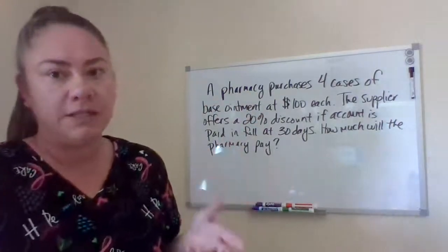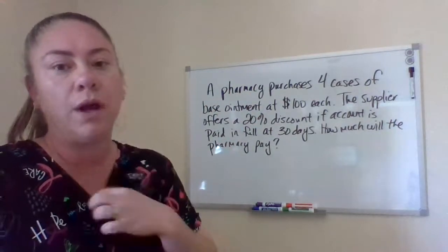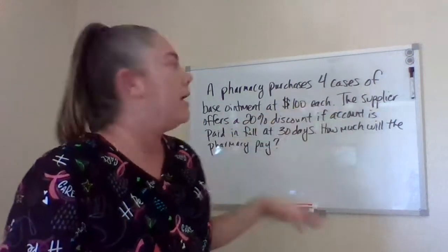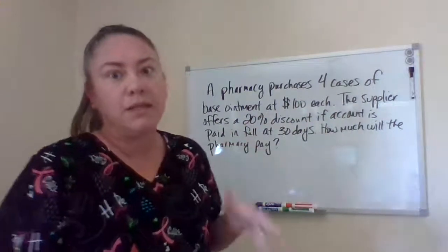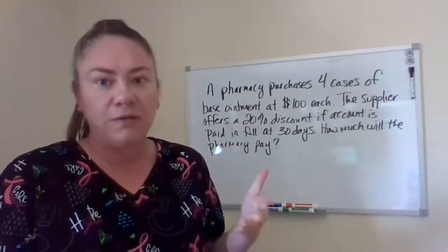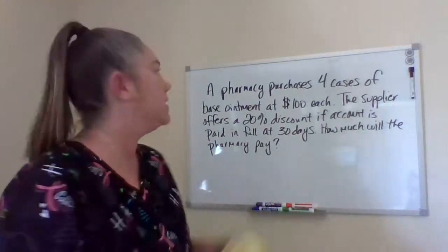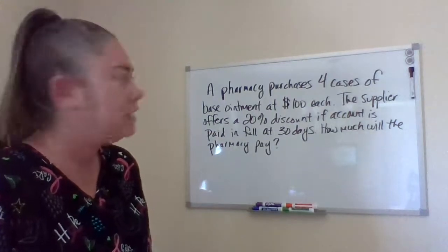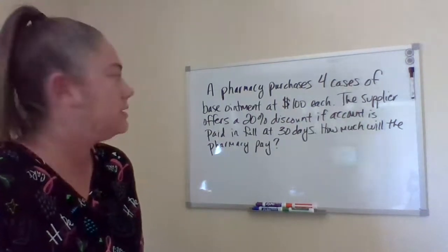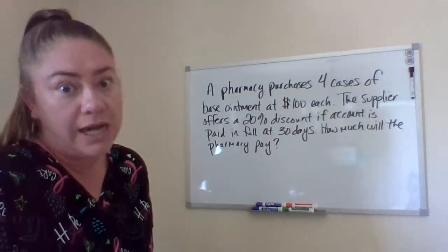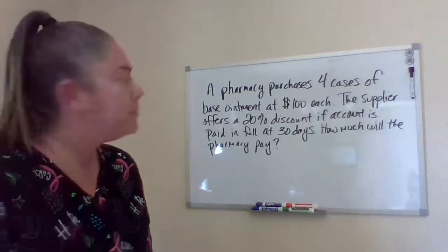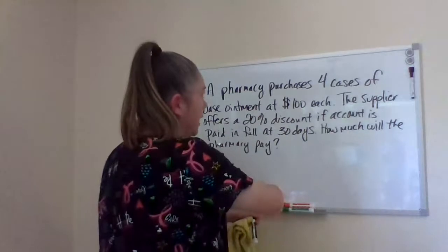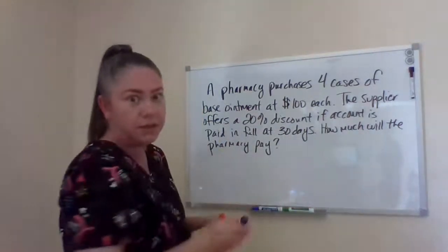This is the discount problem, and most of you on quite a few of these questions didn't account for the total amount of cases or bottles that were purchased. You have to account for all of those first before you apply the discount. So in this case, a pharmacy purchases four cases of base ointment at $100 each. The supplier offers a 20% discount if the account is paid in full within 30 days. How much will the pharmacy pay? The first thing we have to do is figure out what the total amount of the bill is going to be.